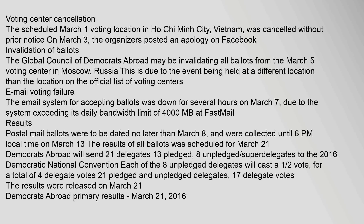Problems: Voting Center Cancellation — The scheduled March 1 voting location in Ho Chi Minh City, Vietnam was cancelled without prior notice on March 3. The organizers posted an apology on Facebook. Invalidation of Ballots — The Global Council of Democrats Abroad may be invalidating all ballots from the March 5 voting center in Moscow, Russia, due to the event being held at a different location than listed on the official list of voting centers. Email Voting Failure — The email system for accepting ballots was down for several hours on March 7, due to the system exceeding its daily bandwidth limit of 4,000 MB at Fastmail.